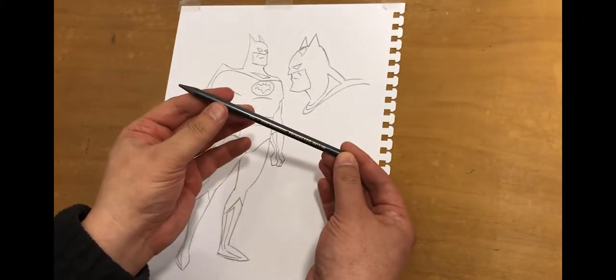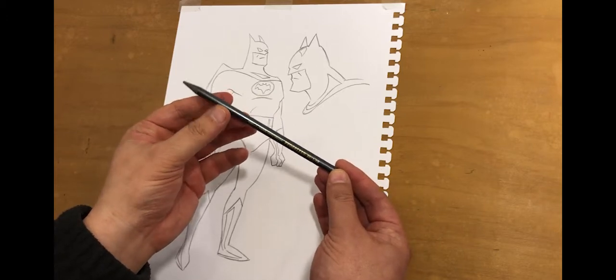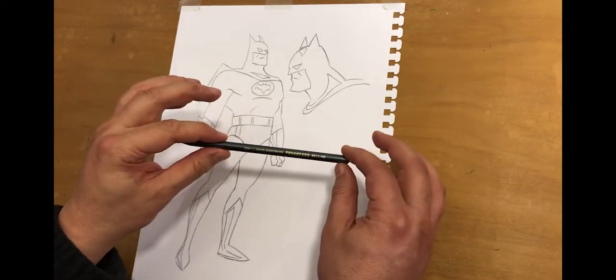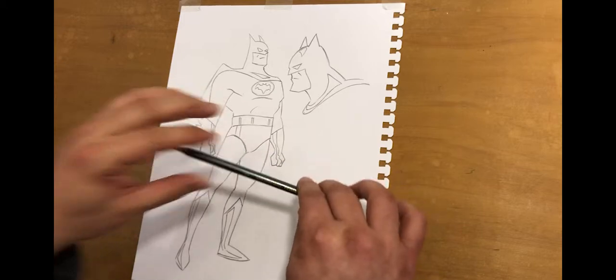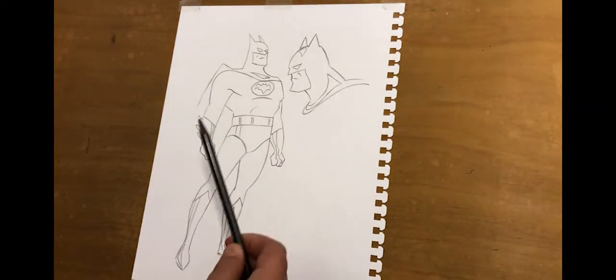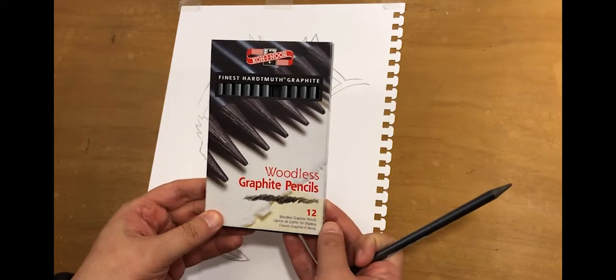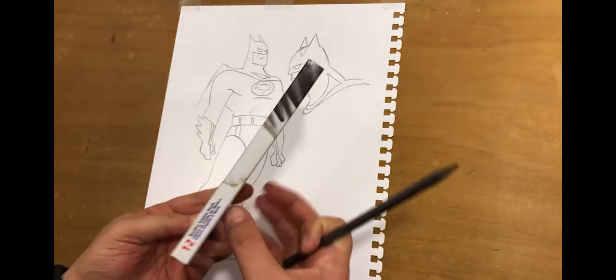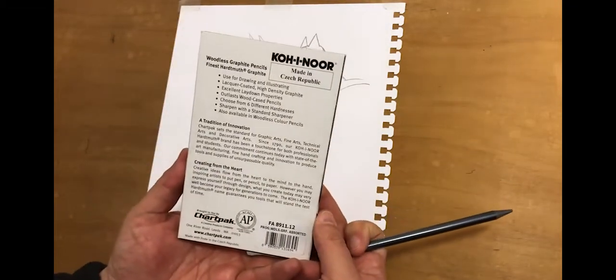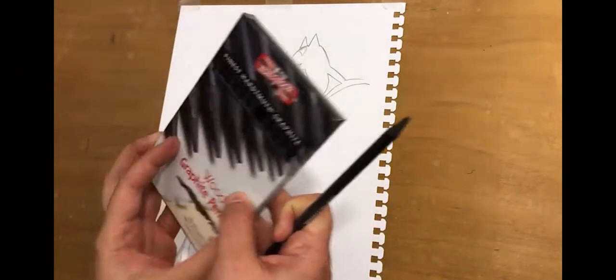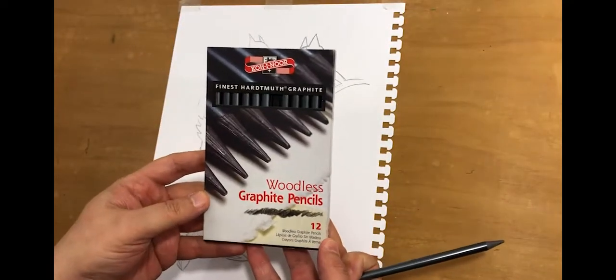The pencil I'm using is a woodless graphite pencil made by Koh-i-Noor. It's a great feeling to draw with this pencil, it's very smooth and dark. This is what the package looks like: woodless graphite pencils, there's 12 of them in this package. I'm using a 4B, it's a nice soft dark color that goes down really well on the paper.